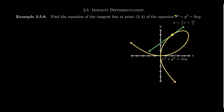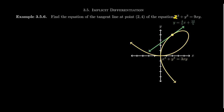If you take 2 cubed plus 4 cubed, you get 8 plus 64, which equals 72. On the other hand, you get 9 times 2 times 4: 4 times 2 is 8, and 9 times 8 is likewise 72. So this is indeed a point on the curve, and we want to find the tangent line at that place.